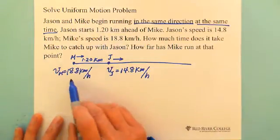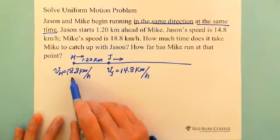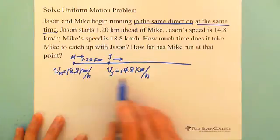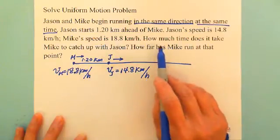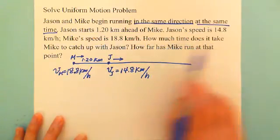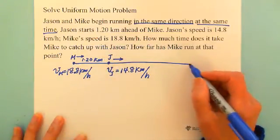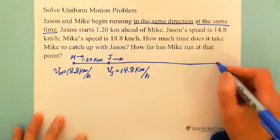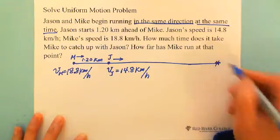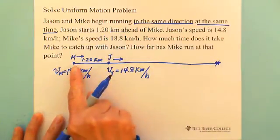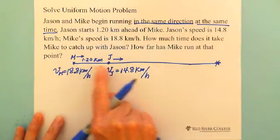Because Mike's speed is faster than Jason's, Mike will finally catch up with Jason. That's why the question asks: how much time does it take Mike to catch up with Jason?